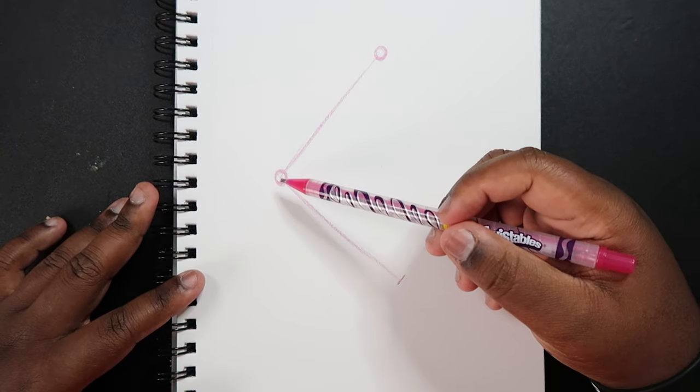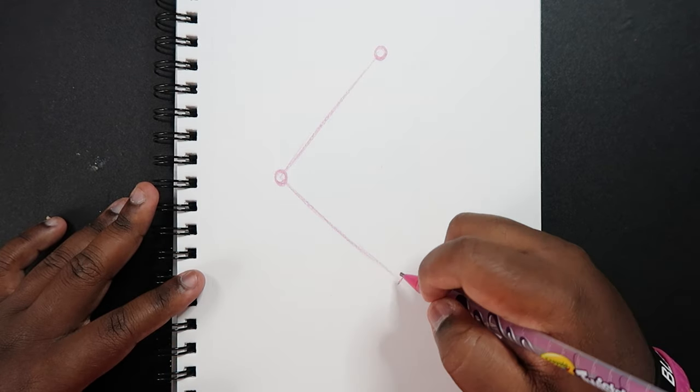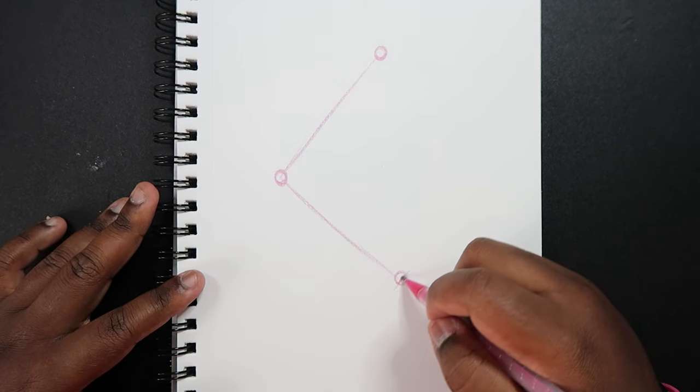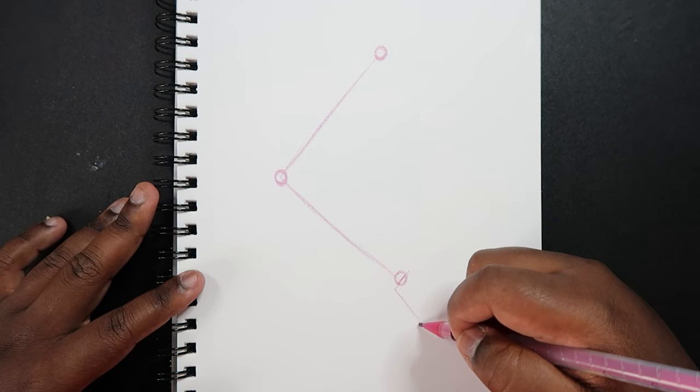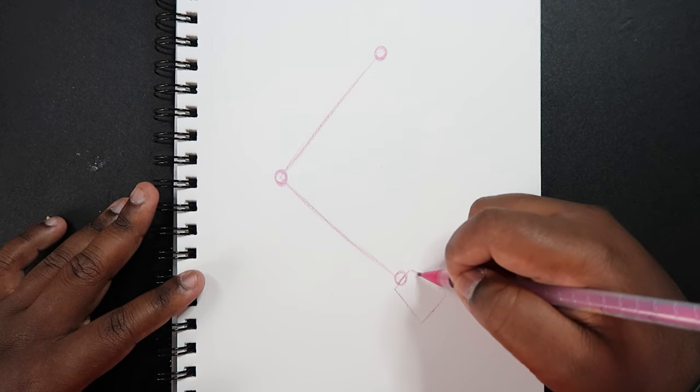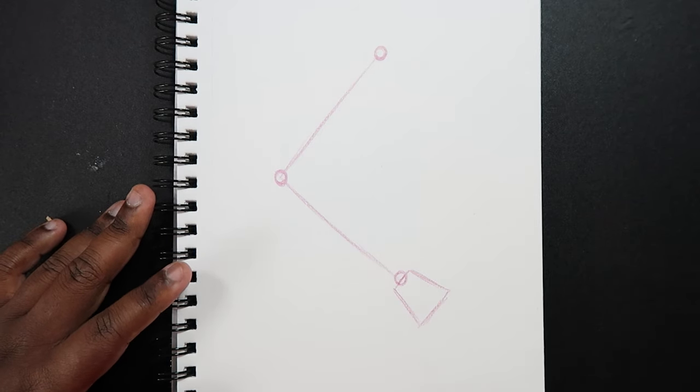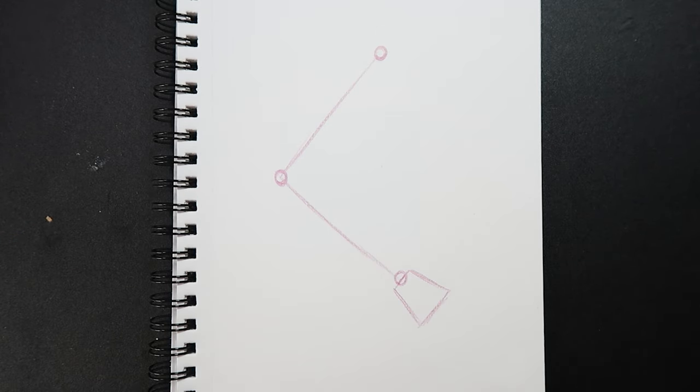So we got shoulder, elbow, wrist. I can draw a circle there actually, and then right here I'm just going to draw a little shape for the hand with the trapezoid. Yeah, so that's our guidelines.